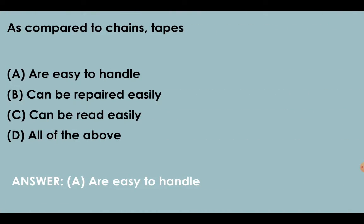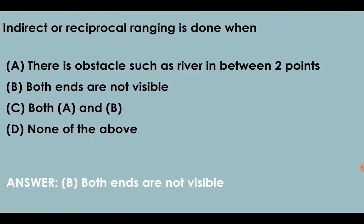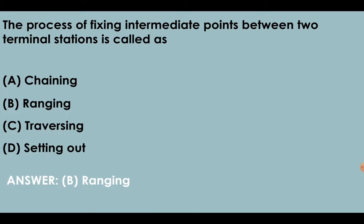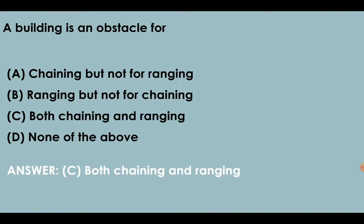As compared to chain, tapes are easier to handle. Indirect or reciprocal ranging is done when both ends are not visible. The process of fixing intermediate points between two terminal stations is called ranging. A building is an obstacle for both chaining as well as ranging.